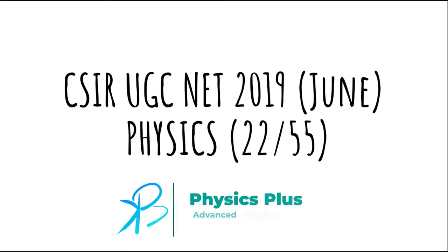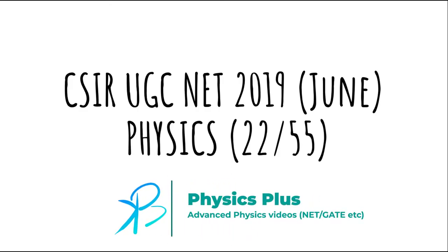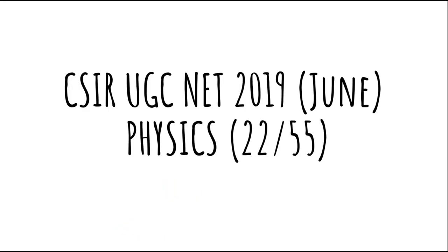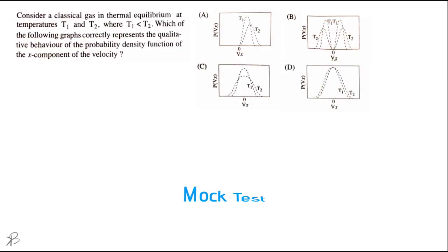Hello and welcome. In this video we will be solving CSI Regicinet 2019 in June, a physics problem 22 out of the 55 problems in the paper. So the problem goes something like this.